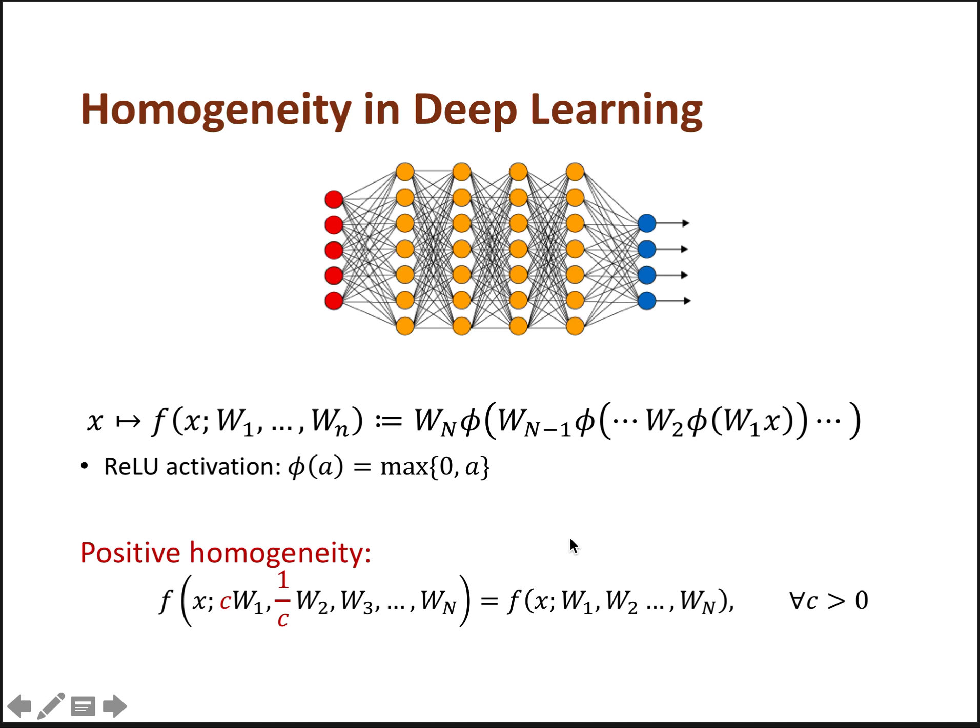This model has a property called positive homogeneity. This means that if you multiply one of the matrices by a positive scalar and divide another matrix by the same scalar, you get exactly the same function. And this is easy to see from the definition of ReLU.